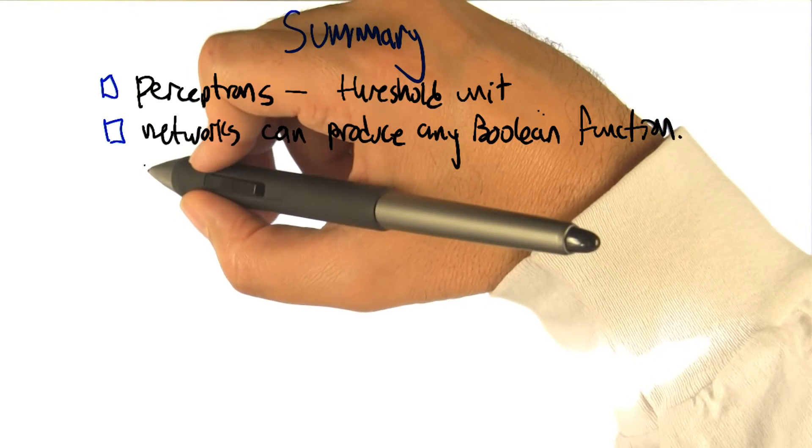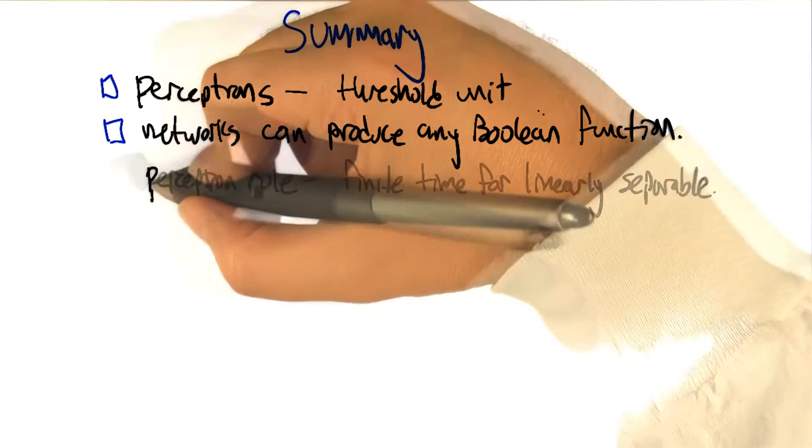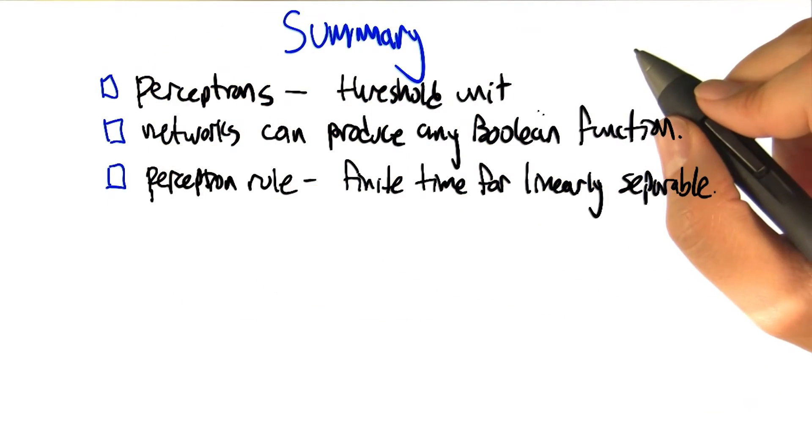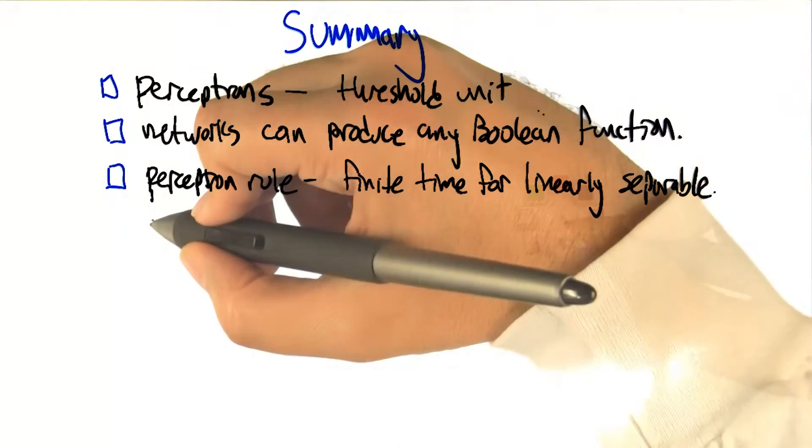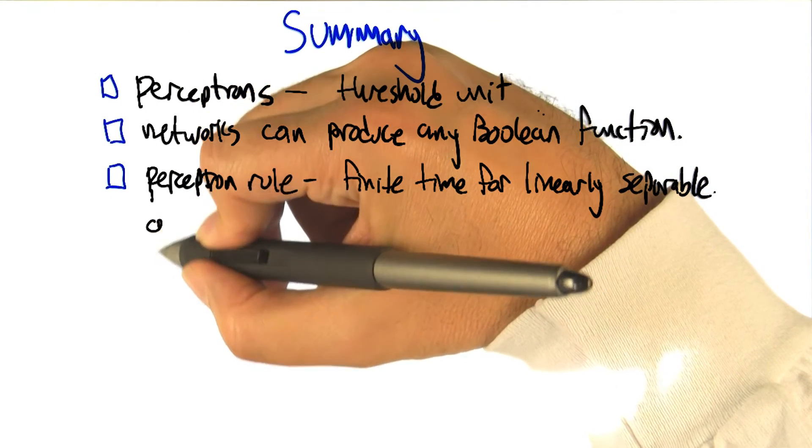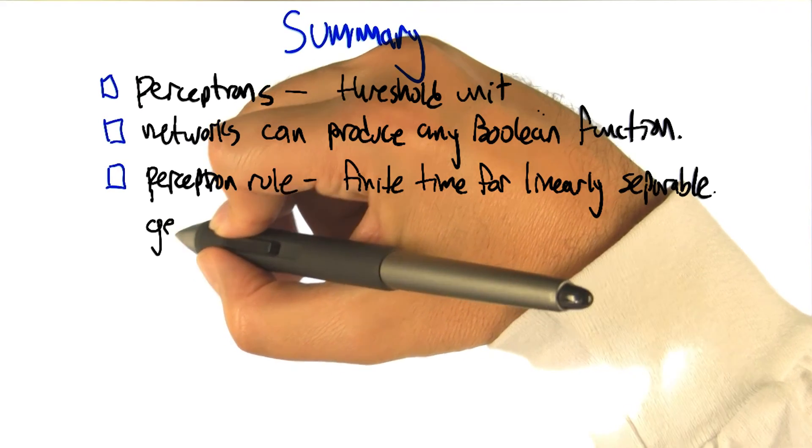What else? We had a learning rule for perceptrons, which runs in finite time for linearly separable data sets. We learned a general differentiable rule and learned about back propagation using gradient descent.